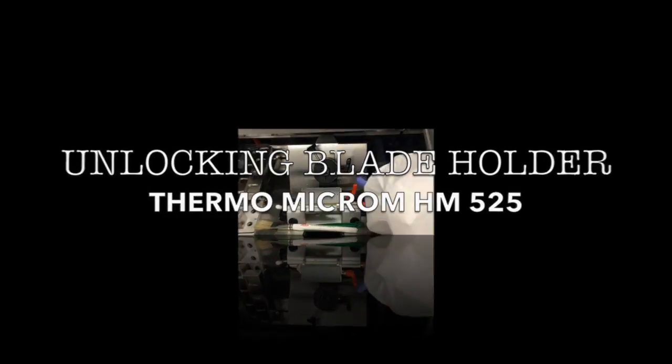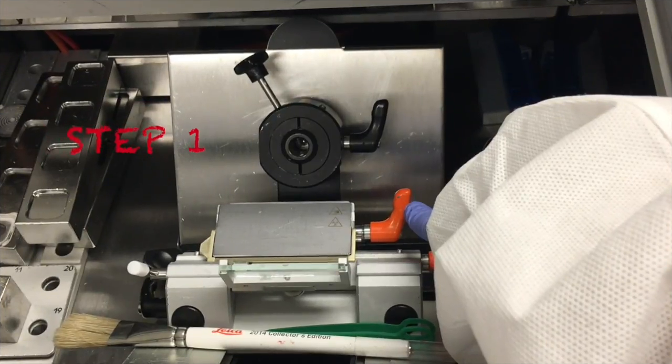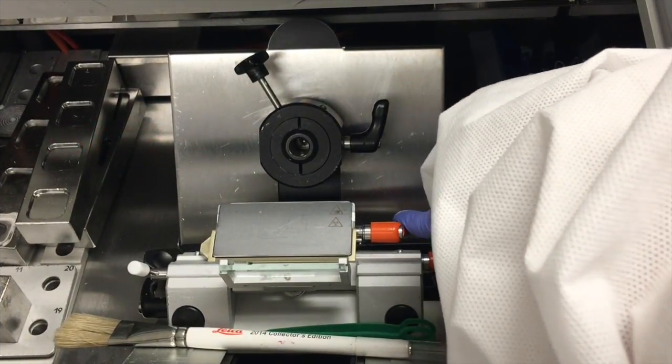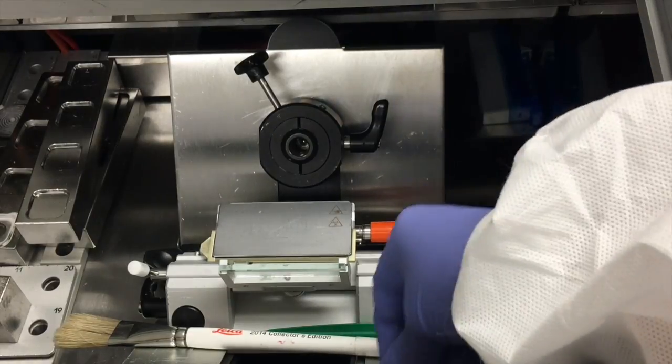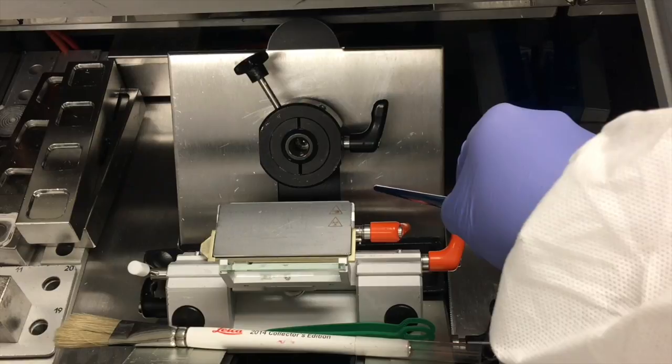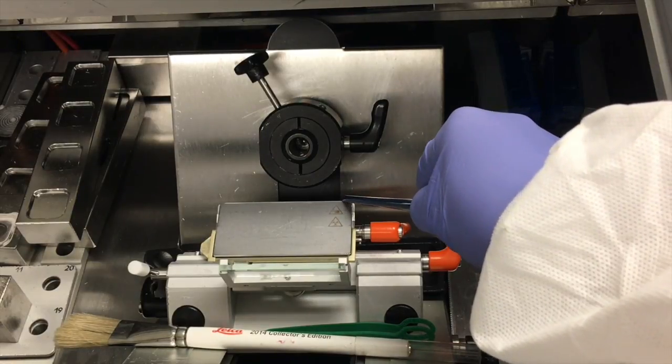Unlocking blade holder from the Thermo Microm HM525. Step 1. Push the orange blade clamping lever located on the top right hand side away from you. Then using the tip of a wooden brush handle push the blade from behind the blade clamping plate.